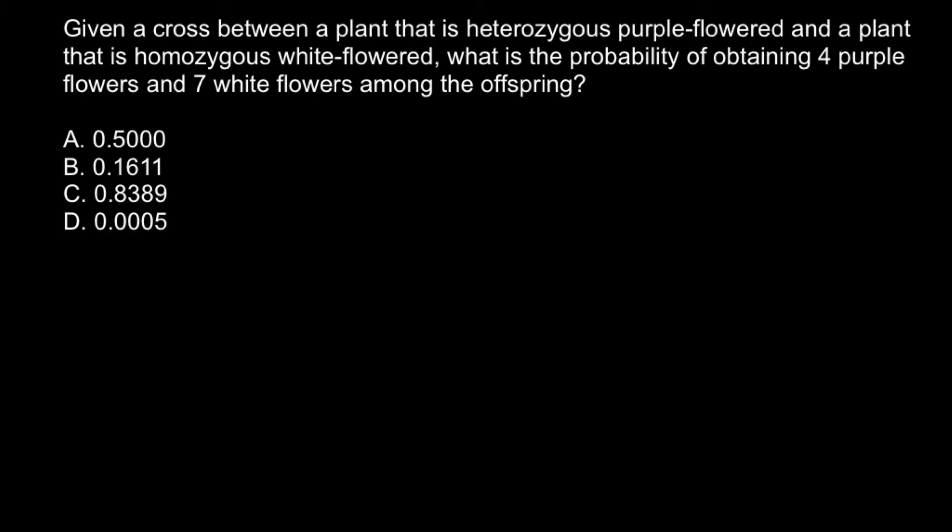Hi, in this video I'm going to talk about the law of probability applied to genetics. Here's a problem: given a cross between a plant that is heterozygous purple flowered and a plant that is homozygous white flowered, what is the probability of obtaining four purple flowers and seven white flowers among the offspring?